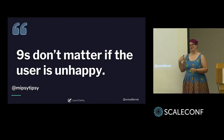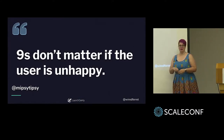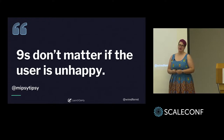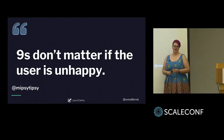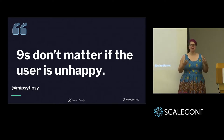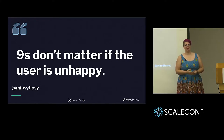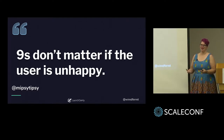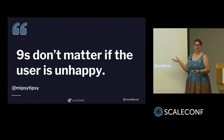I put this slide in a ton of talks because it's so good. Charity Majors, who came down here and spoke two years ago, said — and I truly believe — nines don't matter if your user is unhappy. It doesn't matter how stable your system is, how amazing it is, how novel it is, what kind of API language you're using. If your users aren't happy, you're not selling things, you're not succeeding. So maybe test coverage needs to consider user satisfaction.